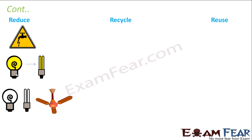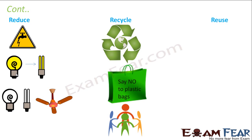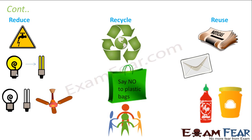We should also try to reduce the unnecessary use of electric fans, bulbs, and tube lights. For example, if your house has six rooms, make sure only the lights and fans of the room you are present in are switched on, with no unnecessary electric appliances running. For recycle, the example is plastic — you do not synthesize new plastics; instead you use old plastics to generate new plastic objects.